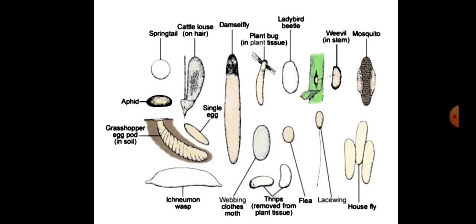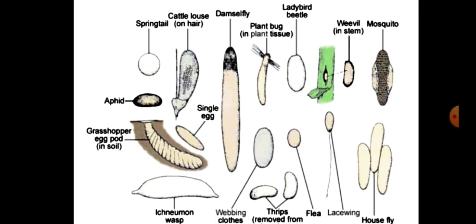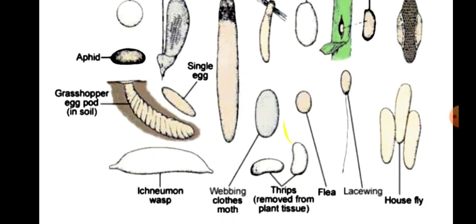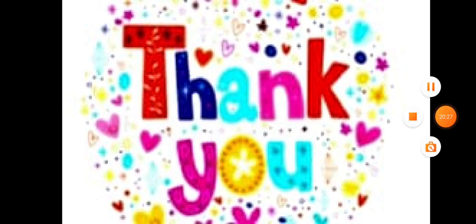In this diagram we can see different types of eggs with their different shapes. Different insects have different types of eggs. Today we studied the egg structure of insects — what their structure is and what types exist. Thank you.